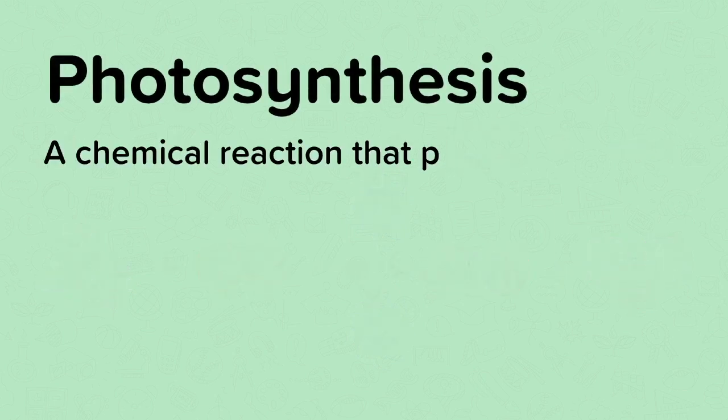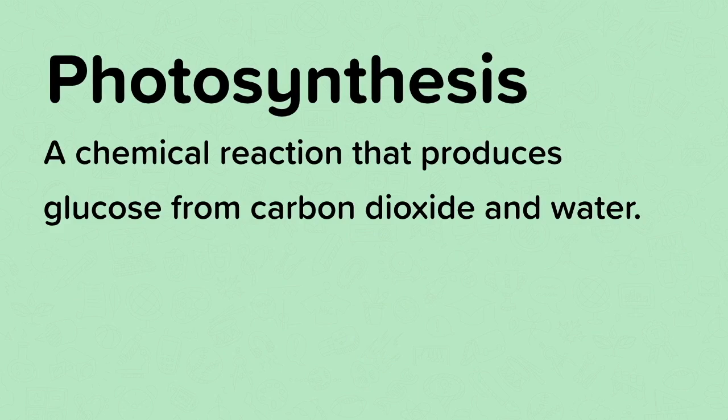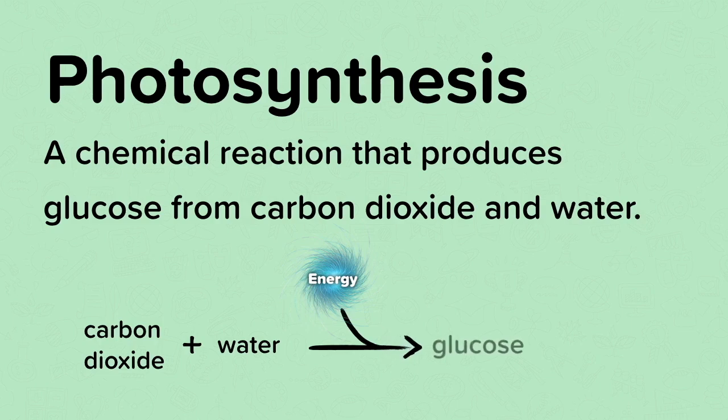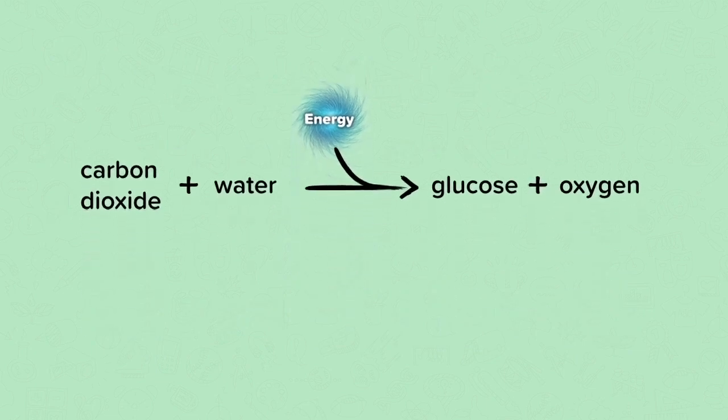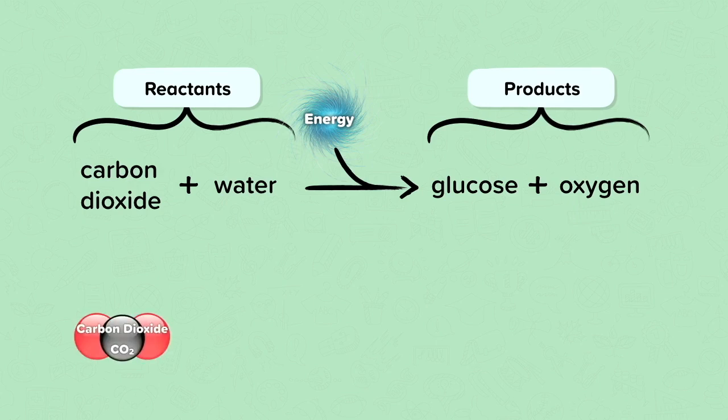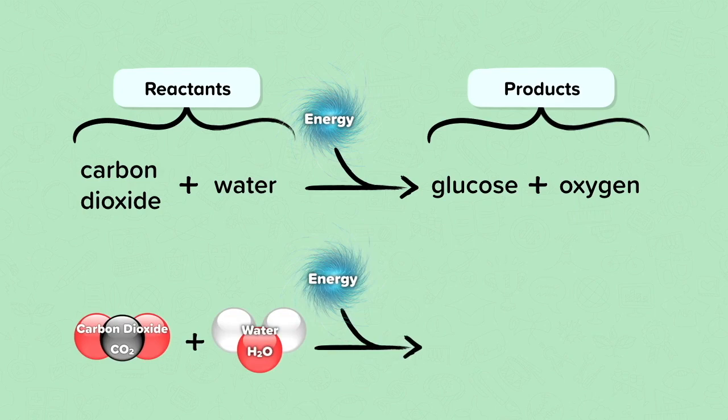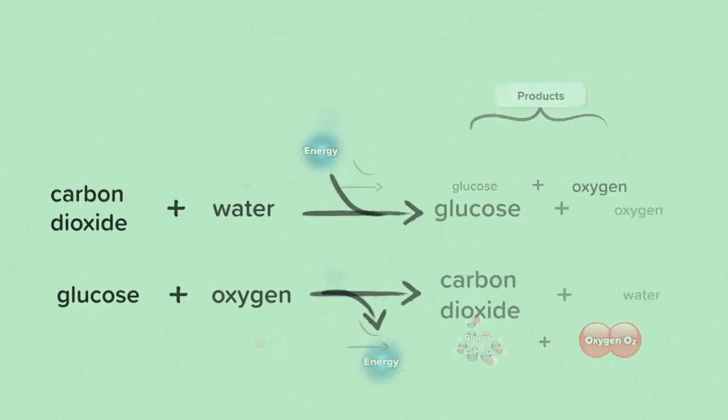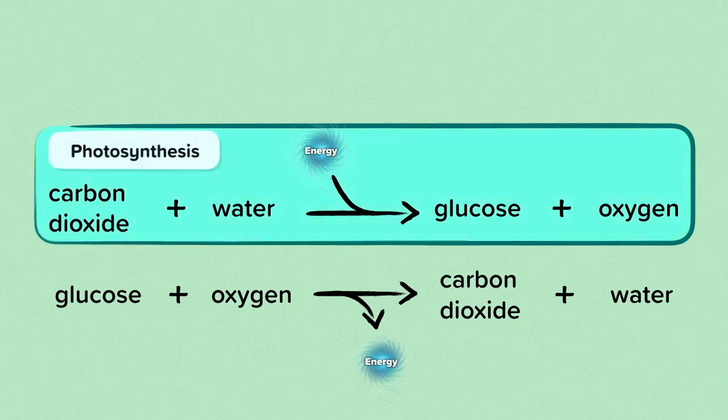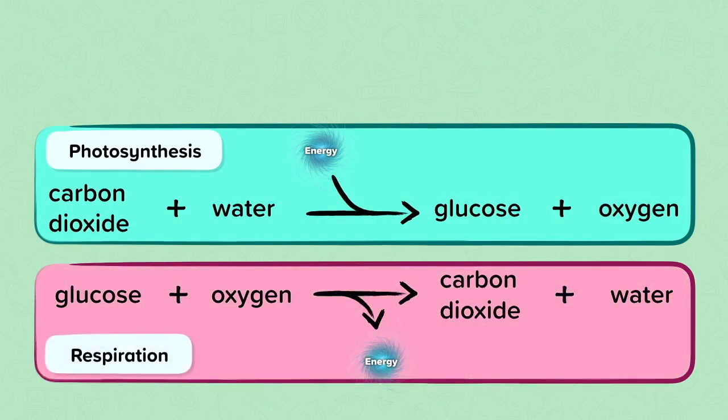Photosynthesis is a chemical reaction that produces glucose from carbon dioxide and water. So carbon dioxide plus water requires energy from the sun to start the reaction and produces glucose and oxygen. Here we can see the symbols and what the molecules look like. Photosynthesis produces glucose, which is a store of chemical potential energy. Respiration releases that stored energy to carry out the life processes. The reactions are the reverse of each other.